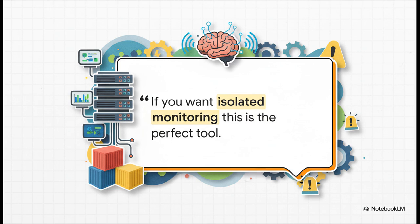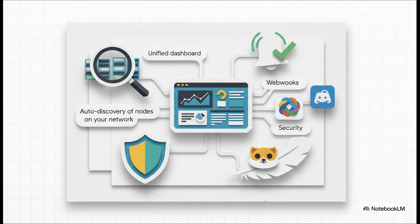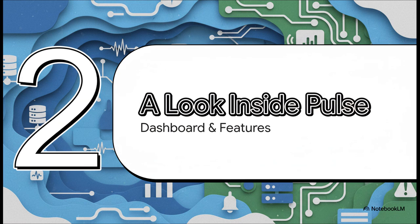As 45HomeLab puts it: if you want a monitoring tool laser-focused on your Proxmox and Docker setup without extra baggage, Pulse is pretty much perfect. It does one thing and does it incredibly well. You get a single dashboard for everything, smart alerts that tell you when things break and when they come back online, integrations with Discord and Slack, auto-discovery of other nodes on your network, and it's built with Go — so it's super lightweight and won't hog your server's resources.